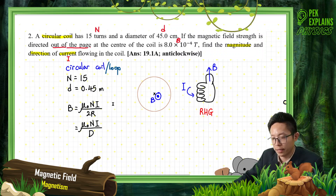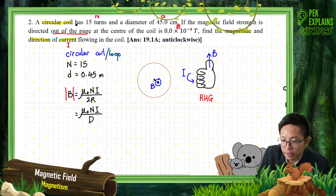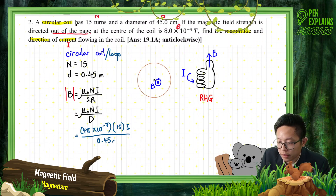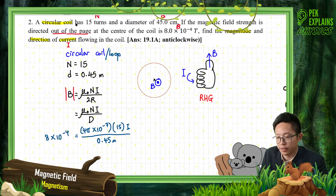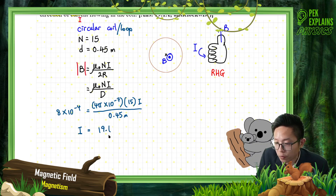Let's calculate the magnitude of the current first. μ₀ = 4π × 10⁻⁷, number of turns N = 15, diameter = 0.45 m, and the magnetic field B = 8 × 10⁻⁴ T. Solving for the current I, I get 19.1 amperes. That's the magnitude.